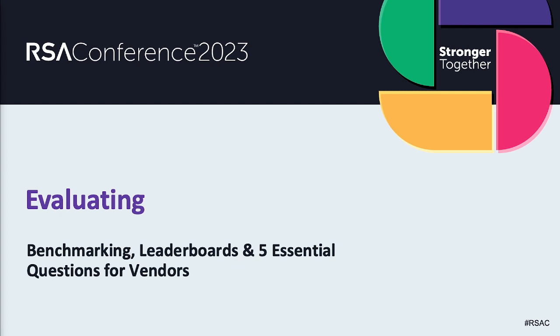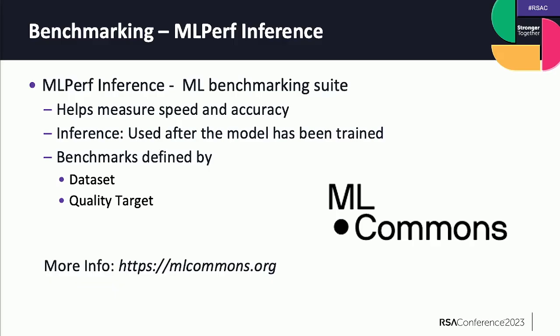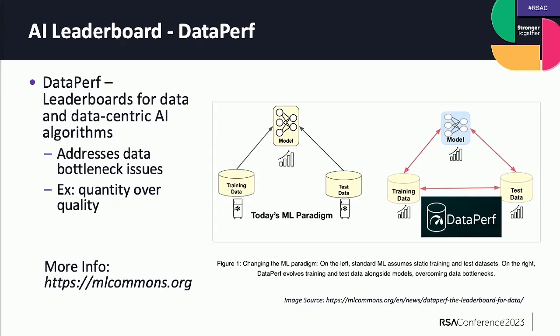So how can you evaluate? There's ML Commons, a nonprofit where you can get ML performance for inference — a machine learning benchmarking suite that helps you understand the speed and accuracy of your machine learning models. Inference means after it's been trained, so you're viewing what it's doing after the fact, and the benchmarks are defined by both the data set and the quality target. If you want to start testing, this is a free way to do it. They also have an AI leaderboard around data performance.